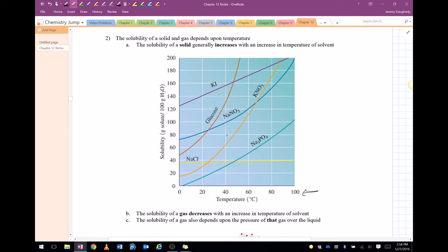So let's say we have 40 degrees Celsius and let's say we're talking about sodium nitrate. So right there, at 40 degrees Celsius, 100 grams of sodium nitrate will dissolve in 100 grams of water. Now if I increase the temperature, I can get more solid to dissolve. So at 60 degrees Celsius, 120 grams of sodium nitrate will dissolve in 100 grams of water.